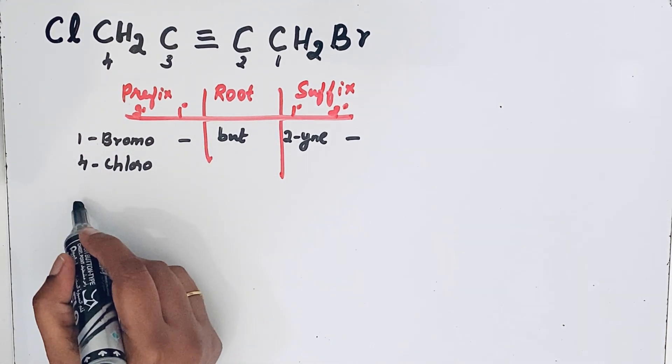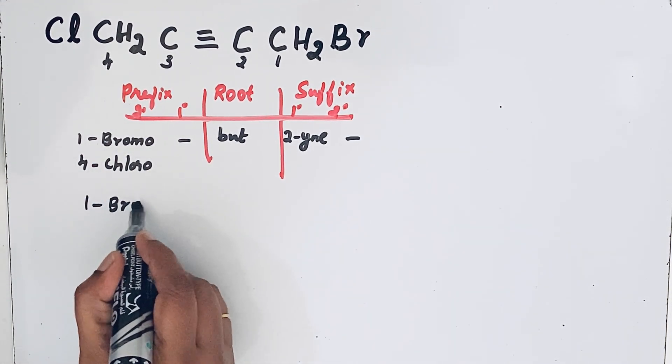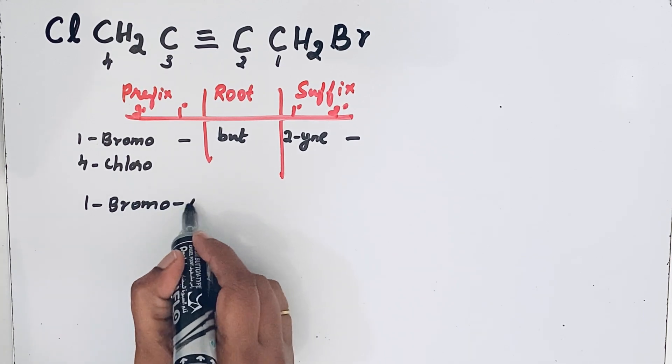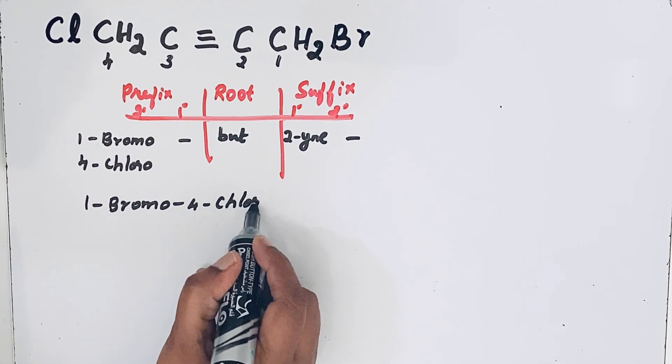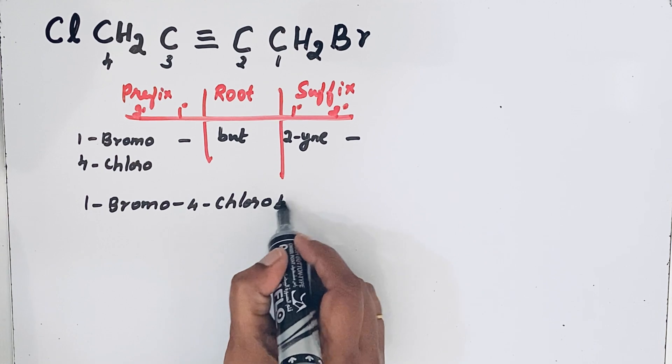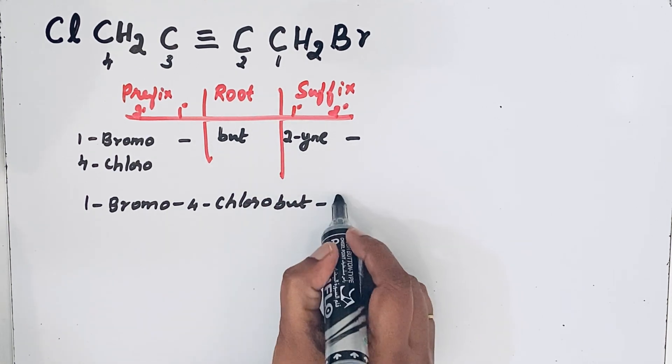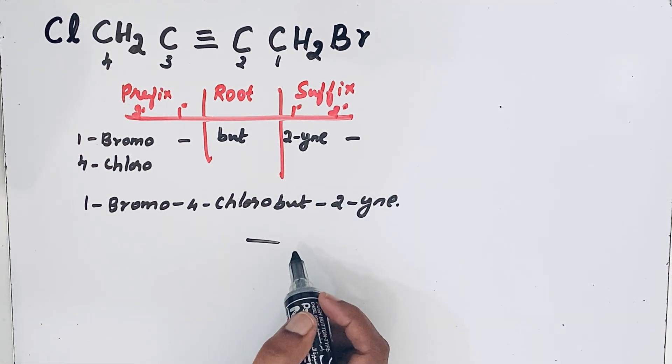We can write that IUPAC name now. 1-Bromo, 4-Chloro, But, then 2-yne. Thanks for watching.